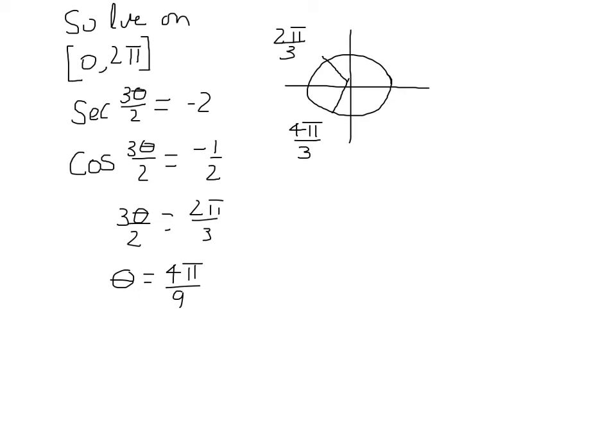We could do the same thing with 4 pi over 3. 3 theta over 2 equal to 4 pi over 3. And then multiply both sides by 2 thirds and find that theta is equal to 8 pi over 9.